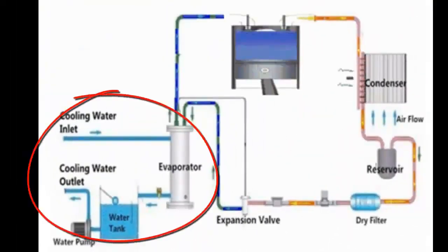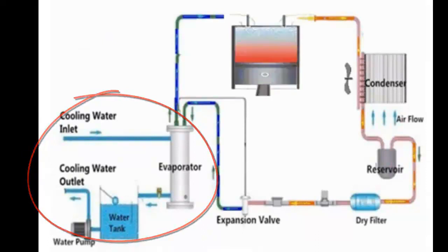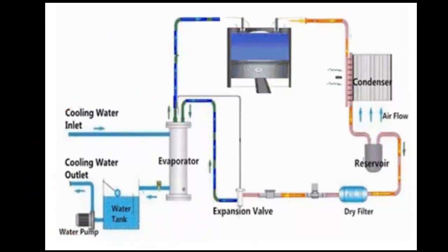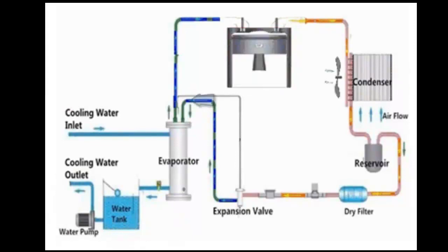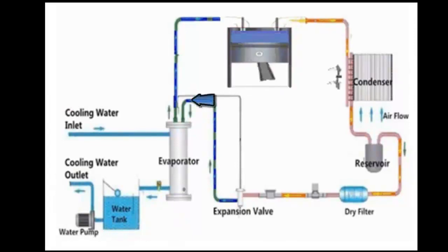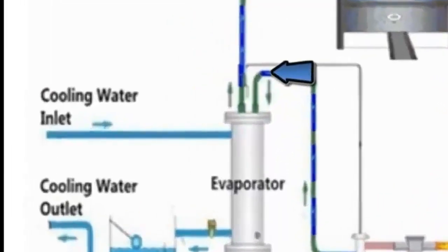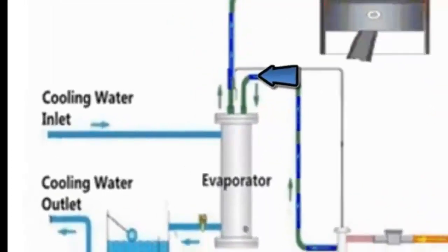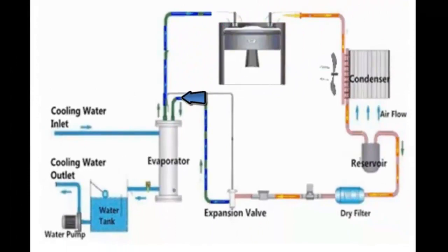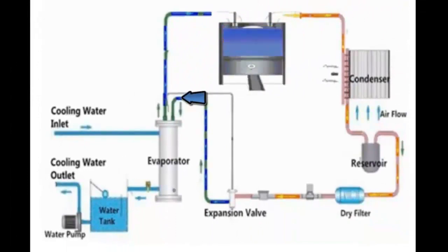Question 4: How does the chiller work internally? A. The refrigerant inside the refrigeration circuit passes through the evaporator, where it is at low pressure and low temperature; in this way it can cool and generate ice water.